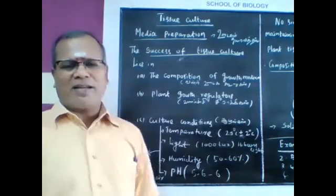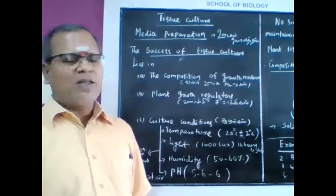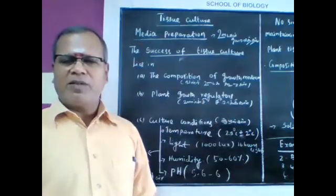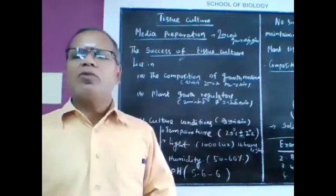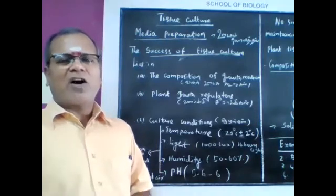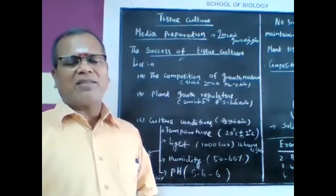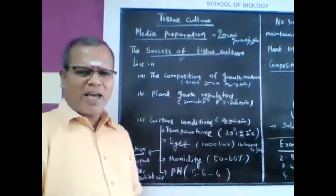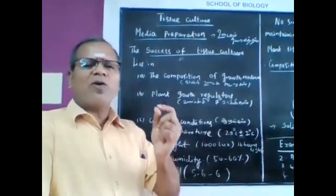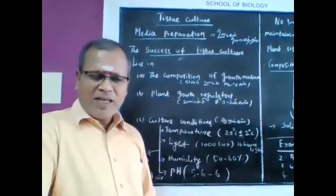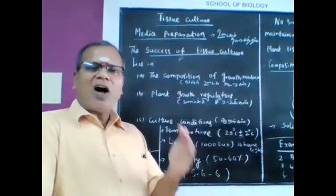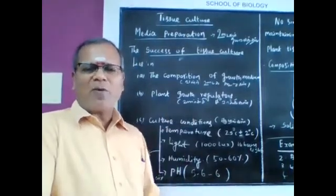The success of tissue culture takes place with the composition of growth medium, plant growth regulators especially the hormones - whether artificial, natural, or synthetic regulators. Hormones are natural organic substances produced by the plant itself. If it is artificially produced in the lab we are calling it as regulator.